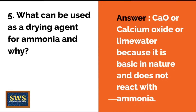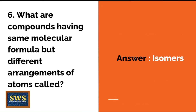What can be used as a drying agent for ammonia and why? This is both an identification and a reasoning question — two in one — so it could come for two marks. The correct answer is lime water, calcium oxide, or CaO, because it is basic in nature and does not react with ammonia.